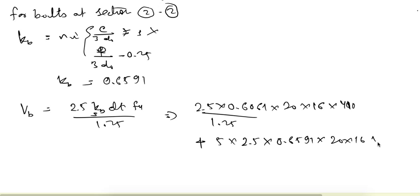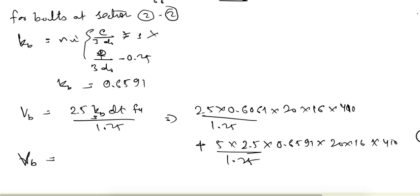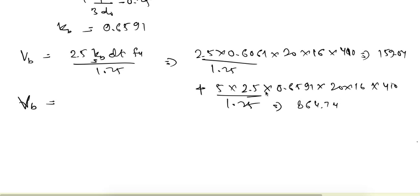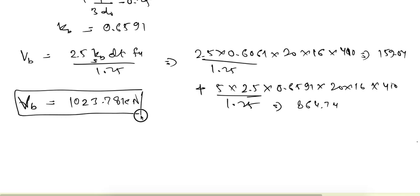For the remaining 5 bolts, bearing capacity equals 5 into 2.5 into 0.6591 into 20 into 16 into 410 divided by 1.25. The bearing strength from the first part comes as 159.04 kN and from the remaining five bolts as 864.74 kN, giving a total bearing strength of 1023.78 kN.